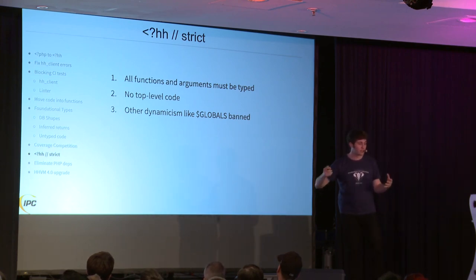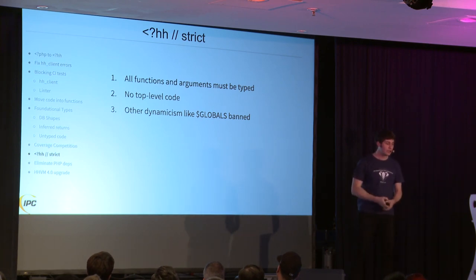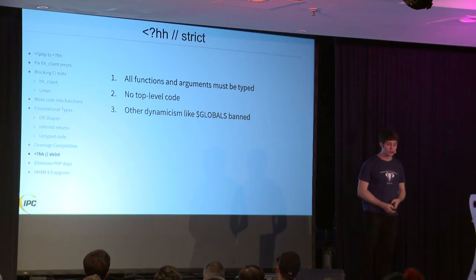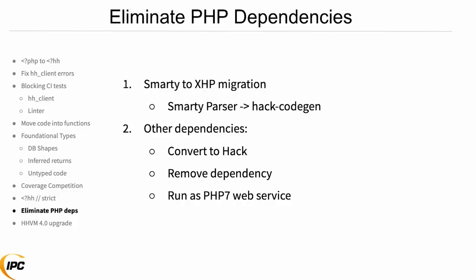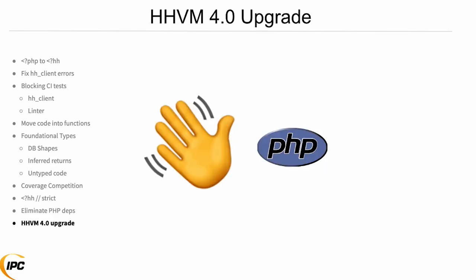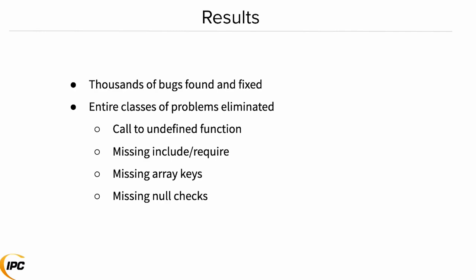That coverage competition allowed us to get to the point where we could actually add the strict annotation — where everything in a file has to be typed. This is when I felt like it was really worth it. Right now about 75% of our files are strict. The last thing we had to do on our journey was to eliminate our vendor PHP code, which was the hardest part — we had a lot of PHP dependencies. We either wrote replacements ourselves, Hackified them, or pulled them out into a web service and ran them as PHP. We completed that and got to the point where we could upgrade to the latest version of HHVM that does not allow PHP at all.